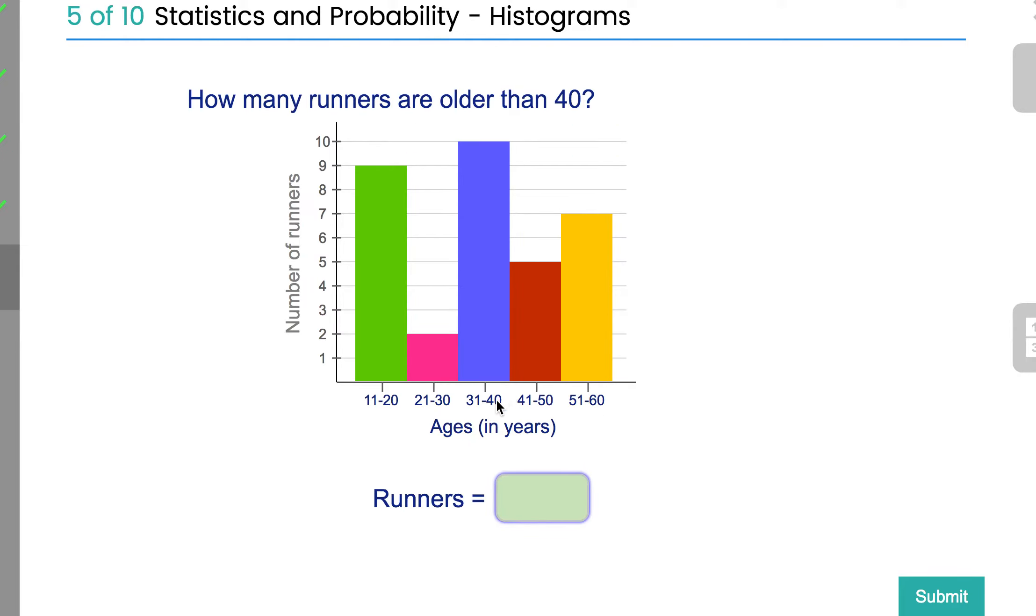Older than 40. So again, you're looking at older than 40, so it's just these last two here. You've got 5 and 7, which is 12.